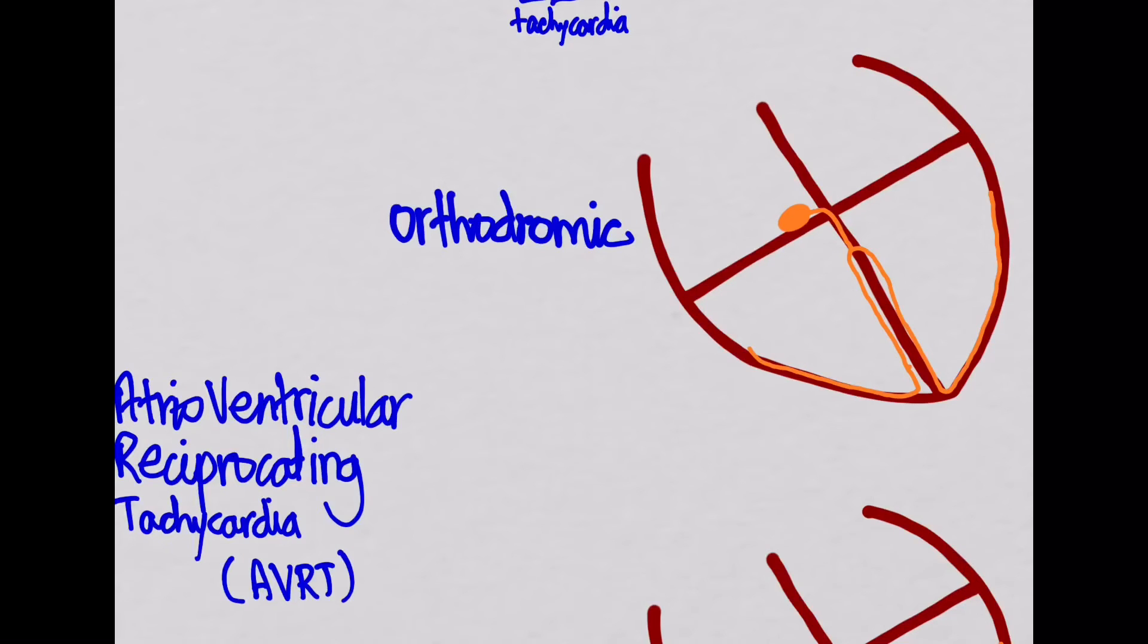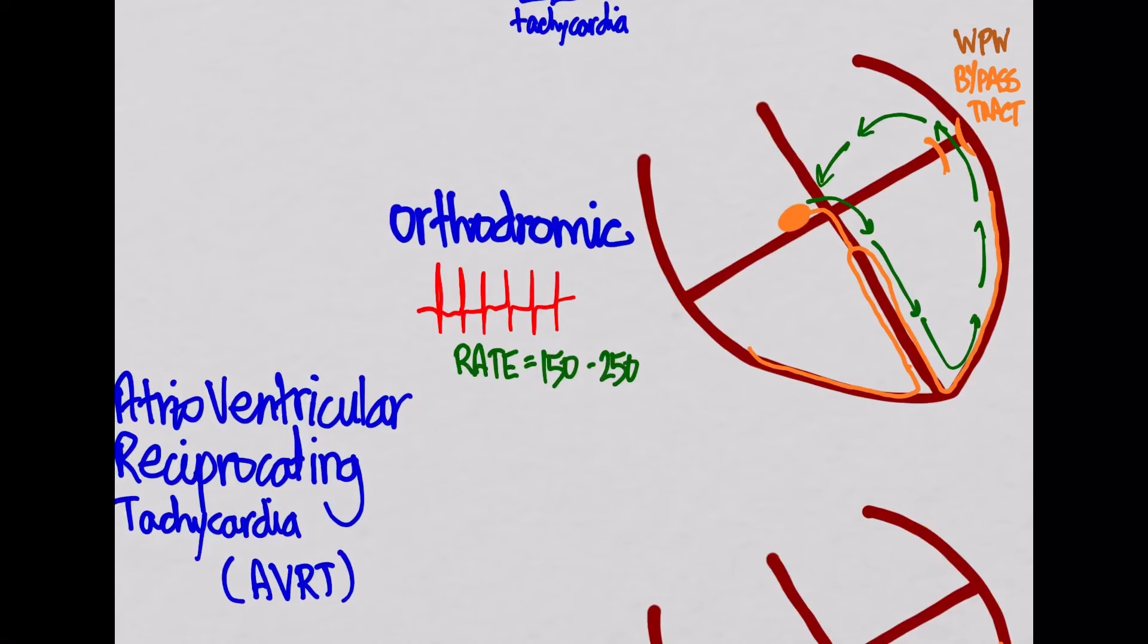In the orthodromic version, the signal is going to come down through the His-Purkinje system and go through the regular pathway. But then there's a way for it to come back up and come around like this. So this implies that there must be some sort of bypass track over here, something maybe like WPW, Wolf-Parkinson-White. And because this one goes through the His-Purkinje system, you can have a narrow QRS with this tachycardia, also with a rate of 150 to 250.